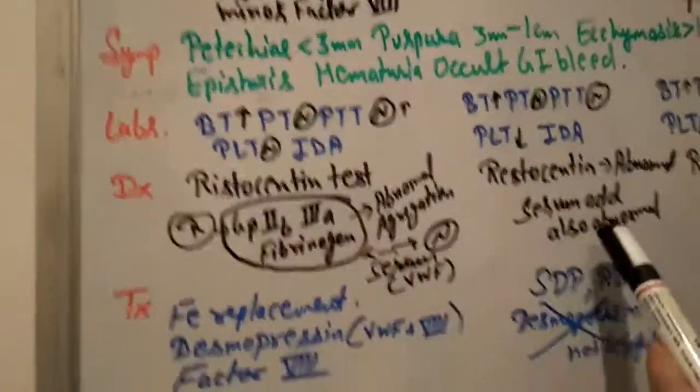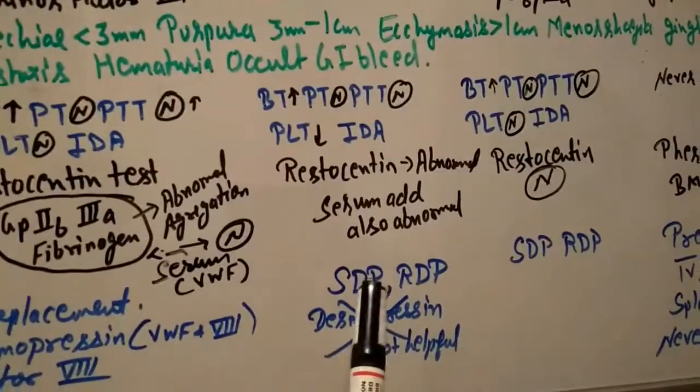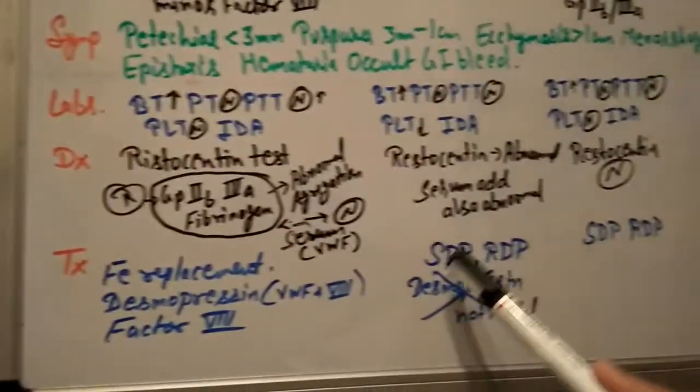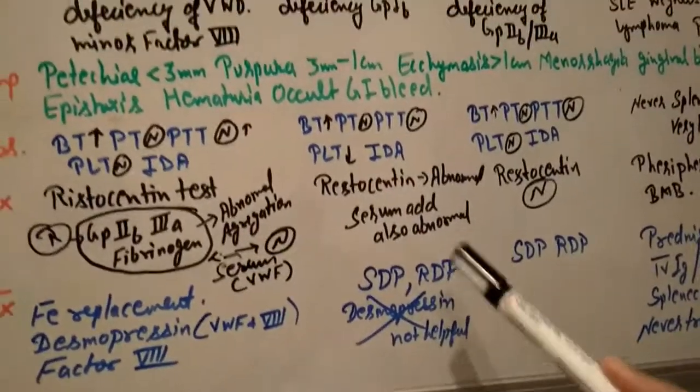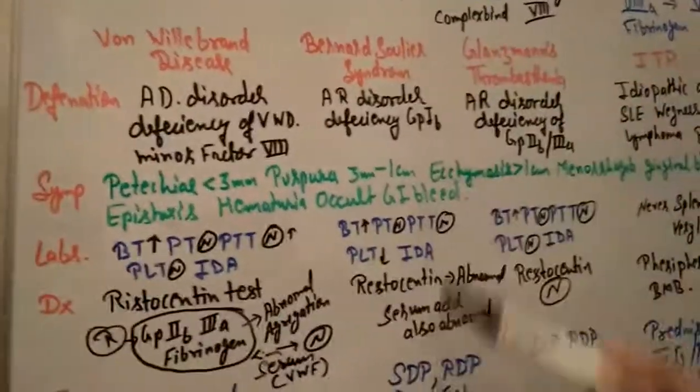We can give SDP and RDP, which are artificial platelets. SDP means single donor platelet—it's from a single donor. RDP means random donor platelet. So we can transfuse platelets in Bernard-Soulier syndrome.